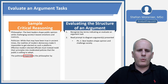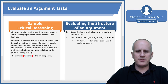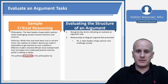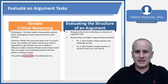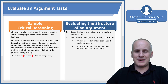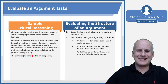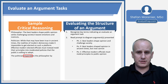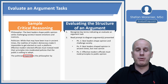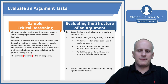Moving to the politician: 'While that may have been true in ancient times, the realities of modern democracy make it impossible to get elected on such a platform. Effective modern elected officials must instead mold their principles into moderated policies that the public is willing to adopt.' We break down premise and conclusion for the politician. The first sentence is premise: best leaders shaped opinion in ancient times, but now cannot. This leads to the politician's conclusion — PO.C — effective modern officials must mold principles to public opinion. This is basically a recommended course of action.